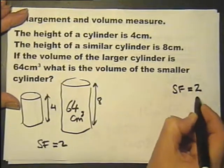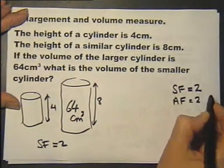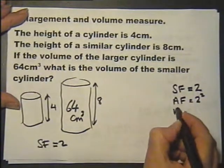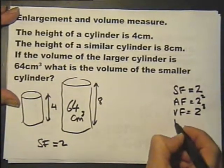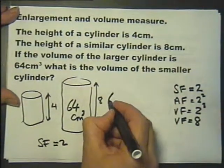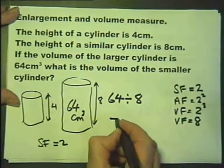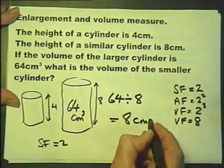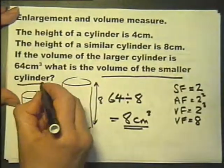If the scale factor is 2, we are working with volume so we will use the scale factor cubed, therefore the volume factor is 8. So if the volume of this is 64, if I divide by the volume factor, we will find the volume of the smaller cylinder.